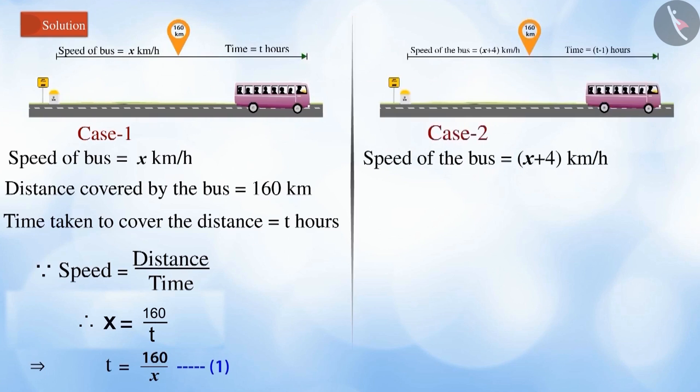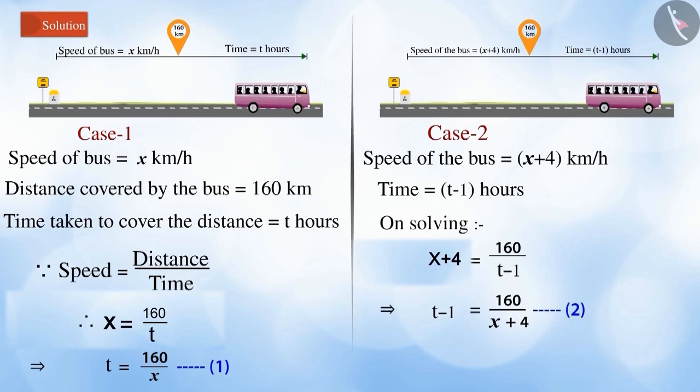On increasing the speed of the bus by 4 kilometers per hour, we get x + 4. According to the question, on increasing the speed, it takes one less hour to complete the distance, that is, time = t - 1. On solving, we get equation 2.